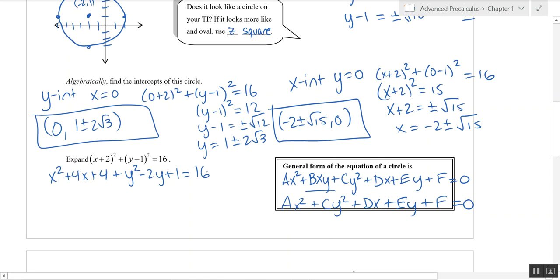We're going to put everything on the left side and we're going to rearrange it so it's in this order, descending order of exponents, and then alphabetical order, X's before Y's. So all the quadratic terms first, we've got an X squared and a Y squared. And then the X's, I've got 4X, and the Y's, I have negative 2Y, and then my constants, I've got 4 plus 1 is 5, minus 16 is negative 11. And that would be our general form.